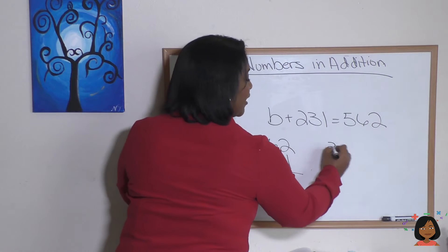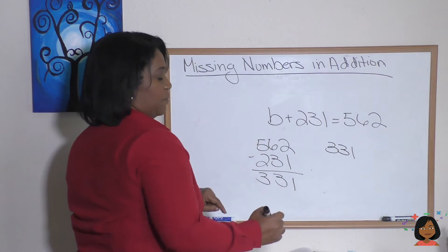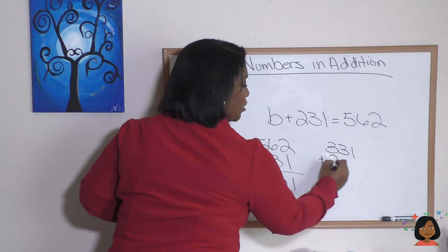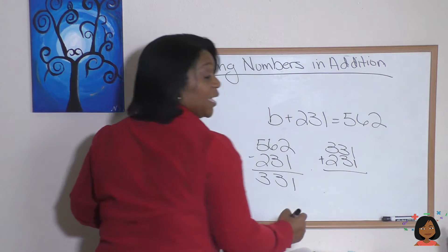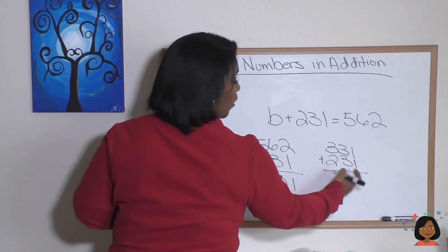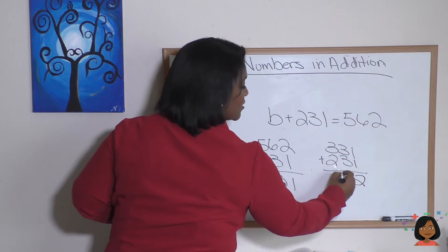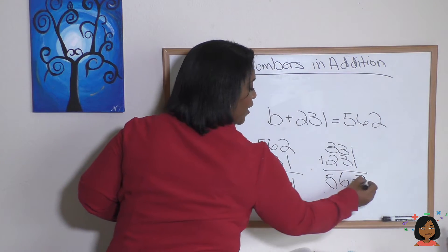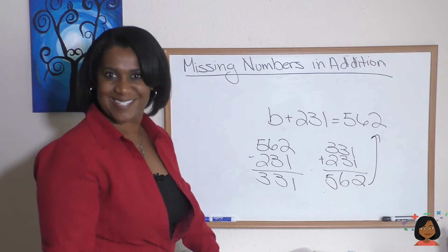Here we go. 331. That's the B plus 231. And let's add it up and see if it equals 562. 1 and 1 is 2. 3 and 3 is 6. 3 and 2 is 5. Well, looky here. It actually works.